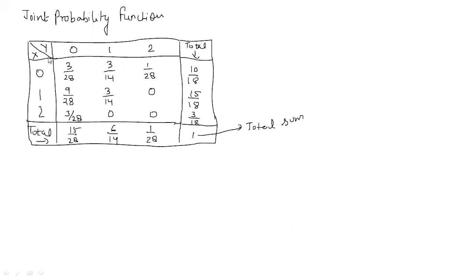Isko hum tabular form mein bhi likh sakti hai. Ye joint probability function ho gaya. Saari values hum ne short mein likh di hai. Matlab, ek hi jagah show kar di hai. Calculate karne ke baad, aap isse tabular form mein aise likh sakti hai. To is tarah ke function ko hum joint probability function kehte hai. Ye jo answer aaya hai, ye joint probability function hai.